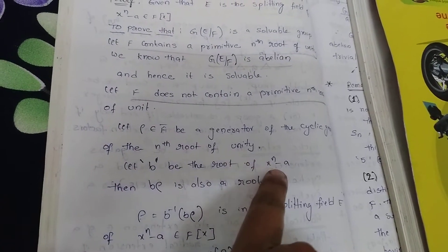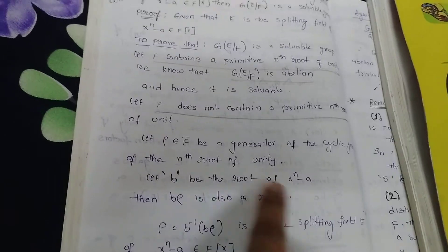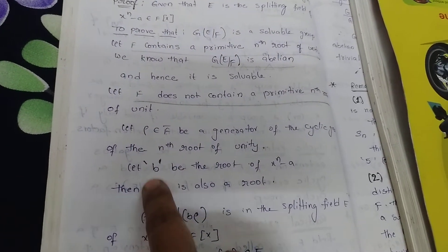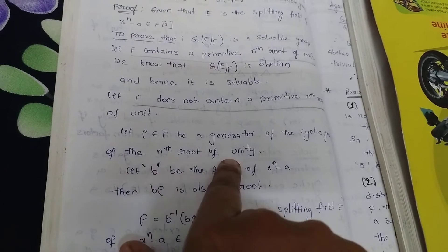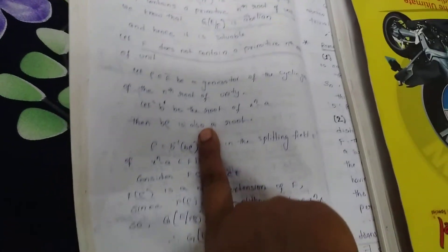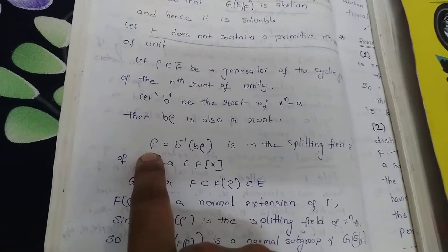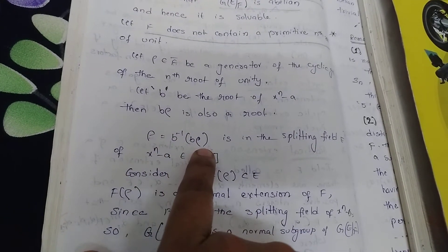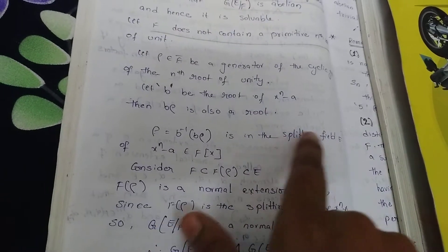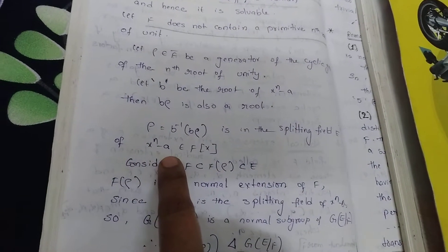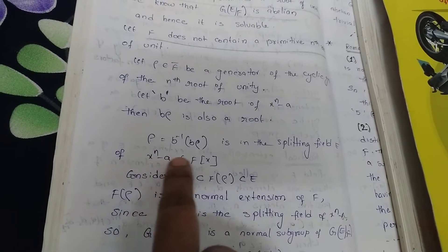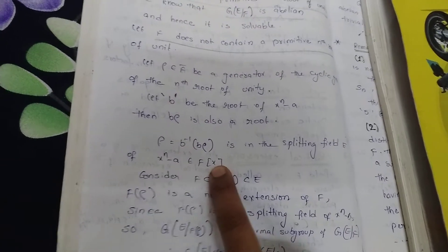Let b be the root of x^n minus a. Then b·ρ is also a root of x^n minus a, since the multiplication of a root by an nth root of unity is also a root. So ρ can be written as b⁻¹·(b·ρ), which is in the splitting field E of x^n minus a. So ρ belongs to the splitting field of x^n minus a in F[x].